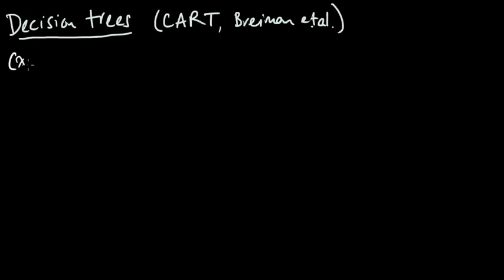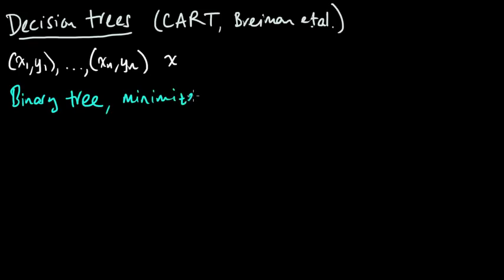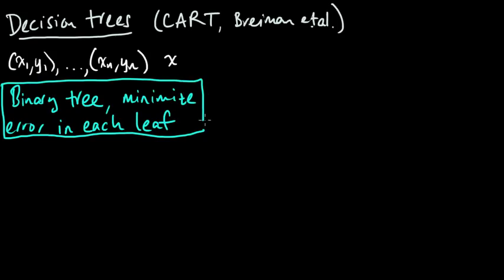So remember the basic setup, as always, in supervised learning is we have some data, and we're given a new point X or a bunch of new points, and we have to associate a Y with the new X or X's. So the main idea behind decision trees, at least in the CART formulation, is you form a binary tree, and you minimize the error in each leaf of the tree. I will explain what that means through an example.